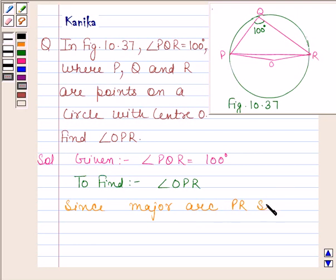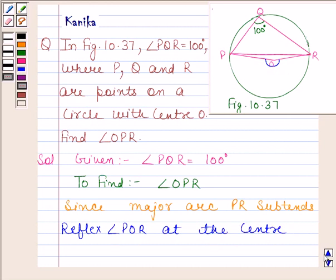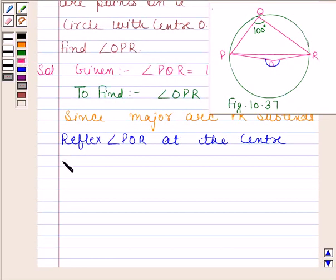subtends reflex angle POR, this one, at the center and angle PQR at point Q on the remaining part of the circle.